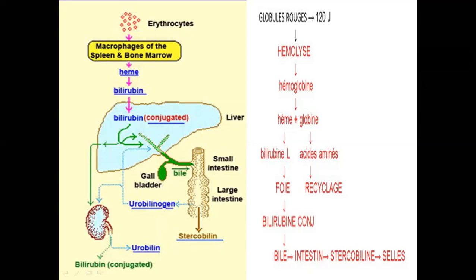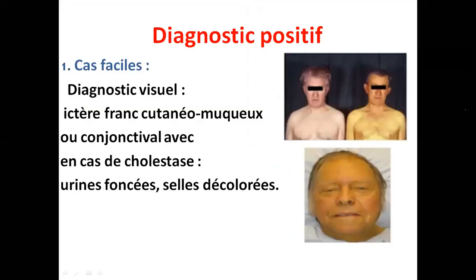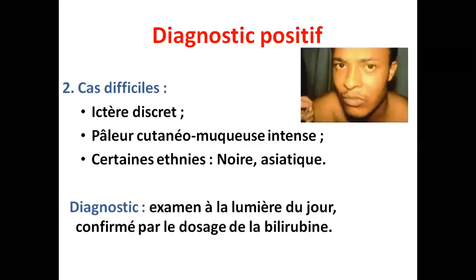Vous connaissez tous cette physiologie. On va commencer le diagnostic positif. C'est un diagnostic visuel : vous voyez le malade et vous voyez un ictère franc, cutané ou muqueux, ou alors les conjonctives qui sont jaunes. En cas de cholestase, nous avons d'autres signes : les urines sont foncées et les selles décolorées.